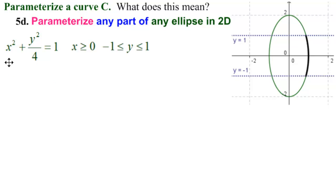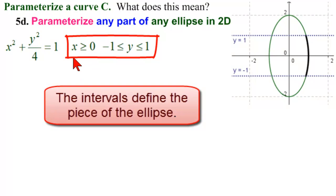a is equal to 1, b is equal to the square root of 4, which is 2. So this gives us the whole ellipse. And then to get our piece, we have x is greater than or equal to 0, and y is between minus 1 and 1.